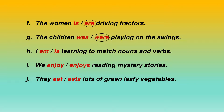Part H: I am or is learning to match nouns and verbs? The answer is 'am' — I am learning to match nouns and verbs. Part I: we enjoy or enjoys reading mystery stories? 'We' is a plural subject, so — we enjoy reading mystery stories. Part J: they eat or eats lots of green leafy vegetables? They is a plural subject, so we use 'eat' — they eat lots of green leafy vegetables. This exercise you have to do in your book very neatly.